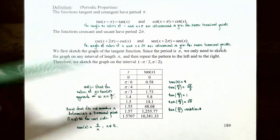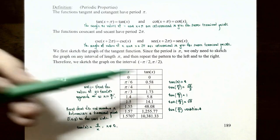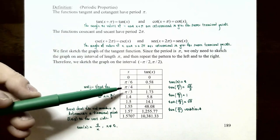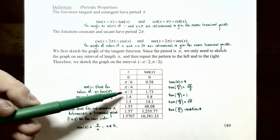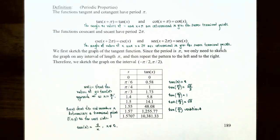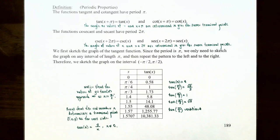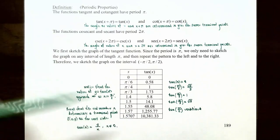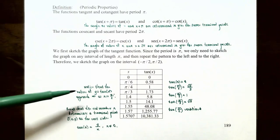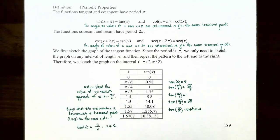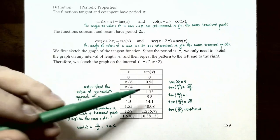The x values are approaching π/2 radians. When x = 0, tan(0) = 0. When x = π/6, tangent ≈ 0.58. When x = π/4, tan(π/4) = 1. When x = π/3, tan(π/3) = √3 ≈ 1.73. Then at x = 1.4, tangent = 5.8; at x = 1.5, tangent = 14.1; at x = 1.55, tangent = 48.08; at x = 1.57, tangent = 1,255.77; and at x = 1.5707, tangent = 10,381.33. The values of the tangent function approach infinity as x approaches π/2 from the left, increasing without bound toward positive infinity.